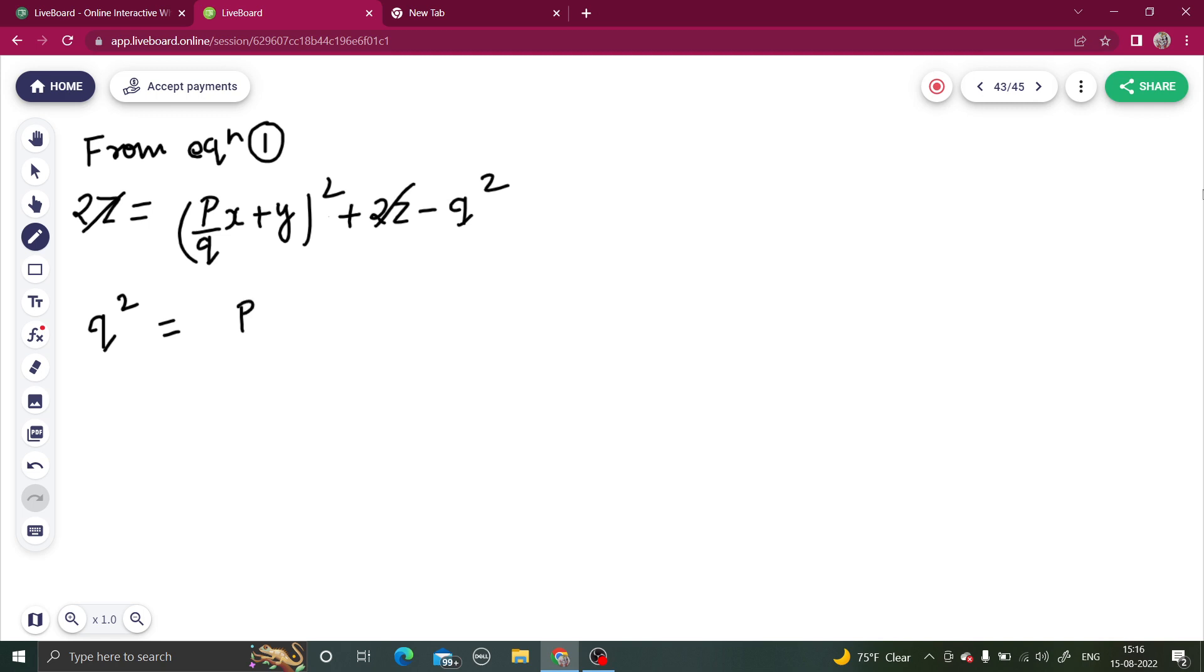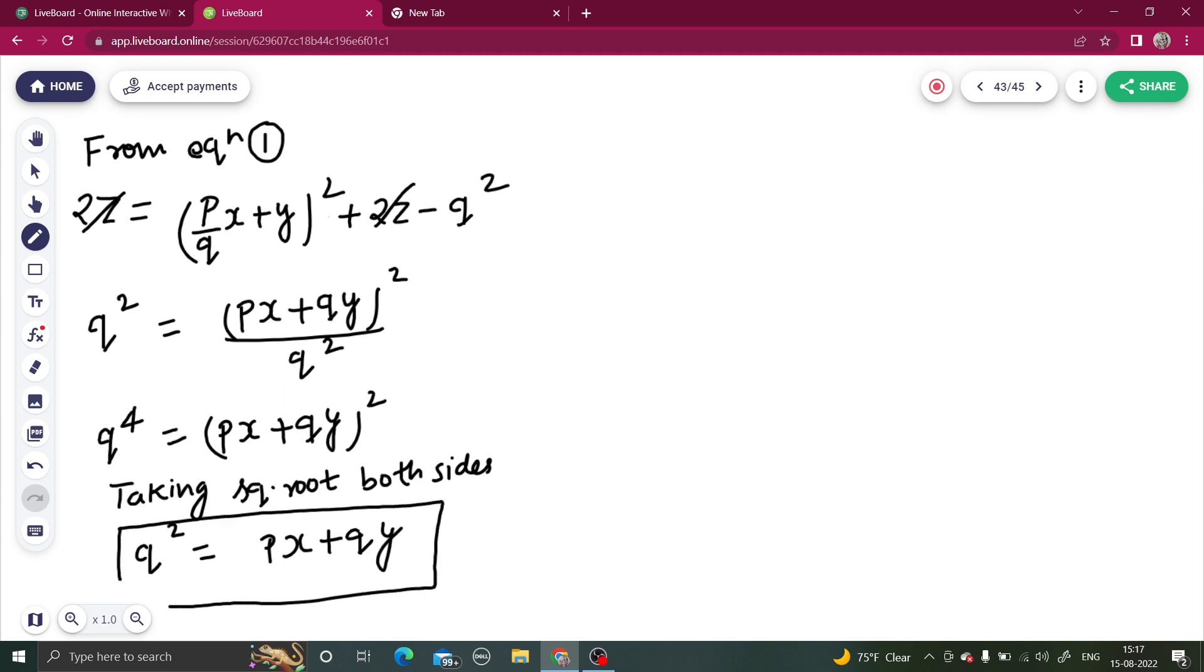So q square equals to (px + qy) whole square divided by q square. Cross multiply, you are getting q power 4 equals to (px + qy) whole square. Taking square root both sides, we are going to get q square equals to px plus qy.